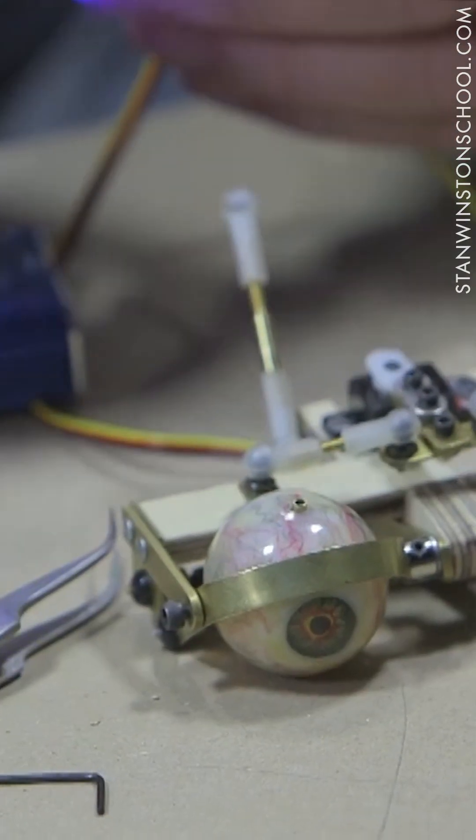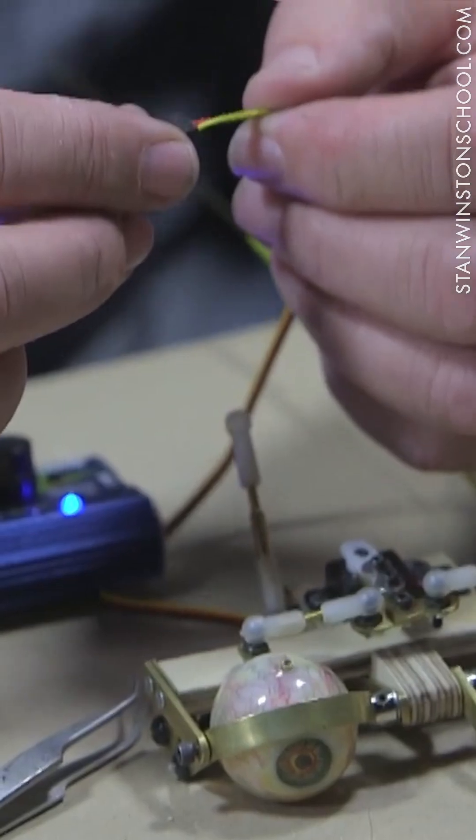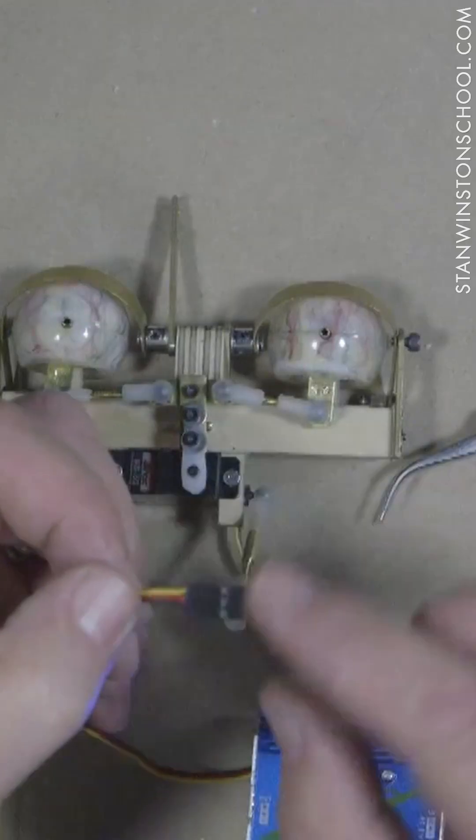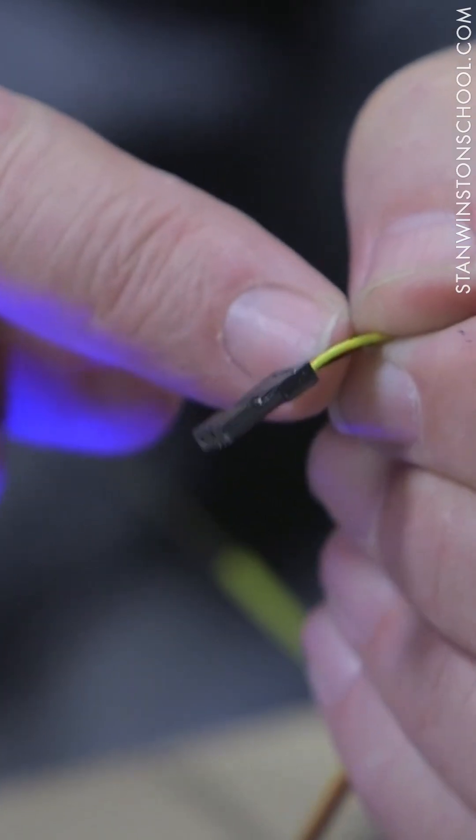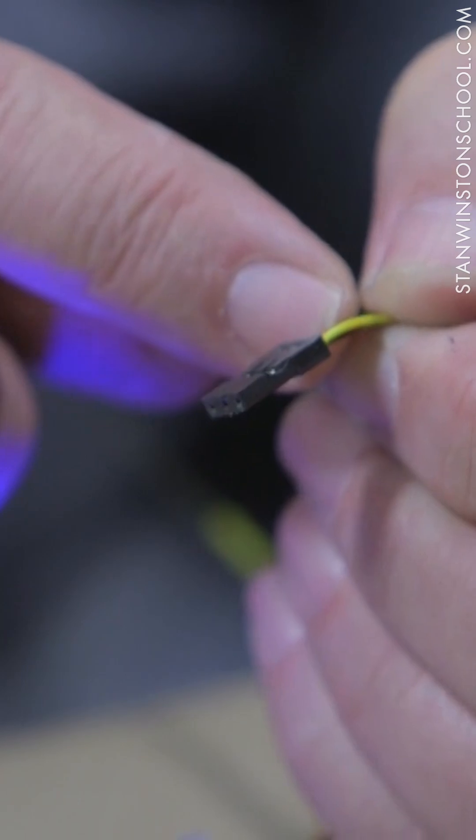And then on our servo wire, the yellow is the signal, the red is the positive, and the brown or the black, depending on the type of servo, is the negative.